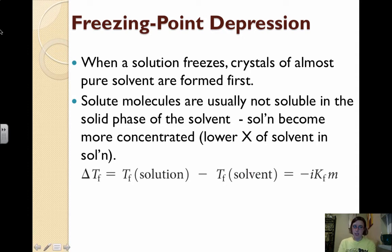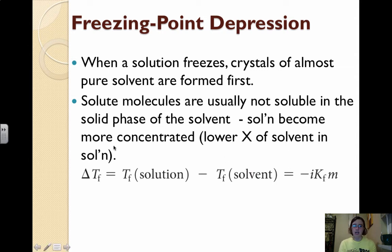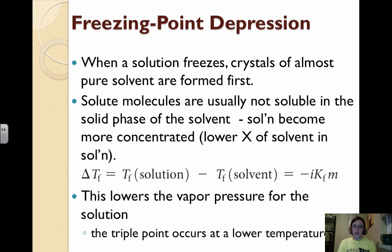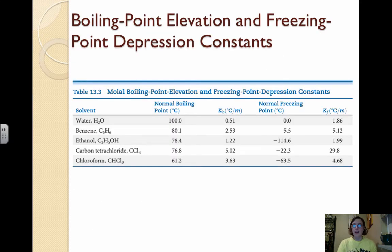For freezing point depression, delta Tf equals negative i times Kf times m. I is the Van't Hoff factor, Kf is the molal freezing point depression constant, and m is molality. Make sure your units cancel and you're left with what you need. The delta T is negative because the solution freezes at a lower temperature. You will be given a table showing the normal boiling point, boiling point constant, normal freezing point, and freezing point constant for each solvent.